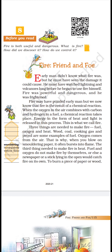Oxygen is present in the air, aur fuel mein kya hota hai — carbon aur hydrogen — jo milke fire banate hain. Yeh ek chemical reaction ka result hai. Next paragraph: three things are needed to make fire — fuel, oxygen, and heat. Wood, coal, cooking gas, and petrol are some examples of fuel.